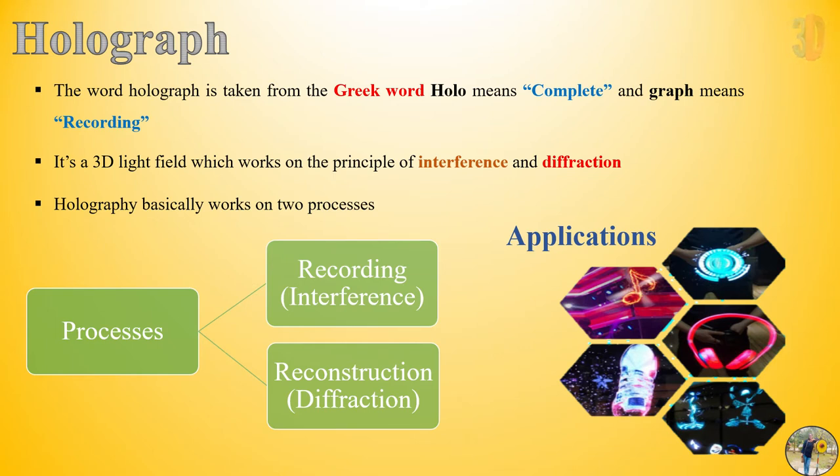Now let's see how it's different from normal photography. What is the difference between holography and normal photography? In normal photography we are just recording the 2D image of an object. Only the intensity of the light that is traveling towards the object and reflecting towards your eyes is being recorded in the form of intensity.